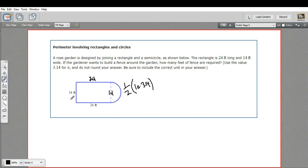So then all we have to do is add all these pieces together. Well, let's calculate this first. So one half times 14 times 3.14. Let me pull out my calculator. That looks like it's 21.98.